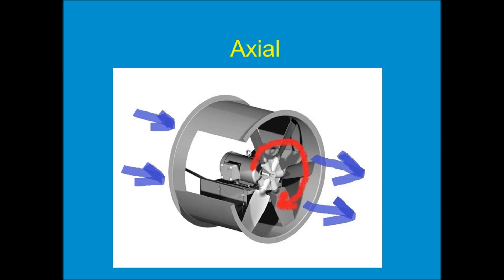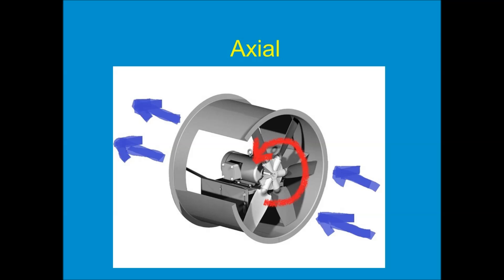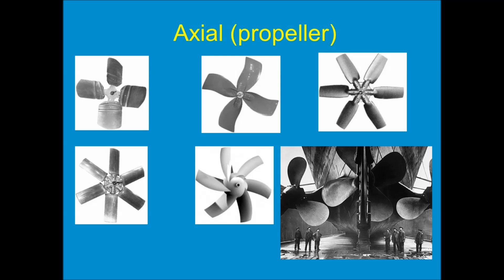With an axial impeller, rotating clockwise pushes the air out away from the fan, and reversing to counterclockwise sends the airflow in the opposite direction. Here are some images of different types of axial impellers used in commercial HVAC — many different materials, sizes, and shapes, each designed to be the best fit for a particular application.